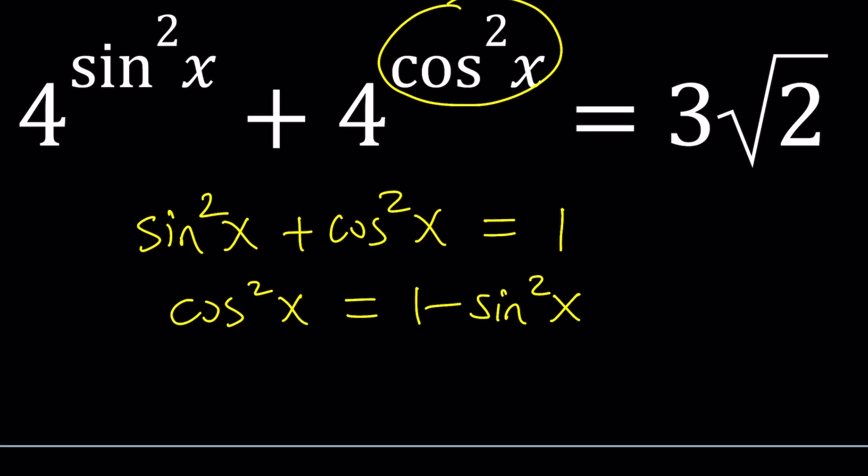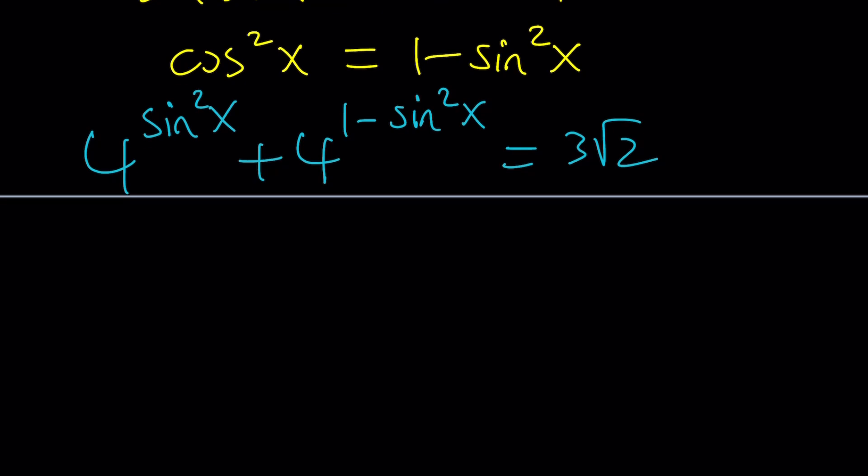Let's go ahead and do this then. 4 to the power sine squared x plus 4 to the power cosine squared, which can be written as 1 minus sine squared x equals 3 root 2. I know some people are thinking at this point, case closed. We're done. No, not really. We're not done because the rest is more fun.